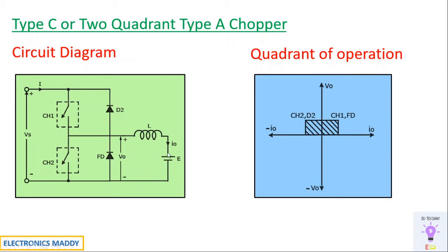When CH2 or D2 is conducting, power will be delivered from the load to the source, so the current will be positive or negative. One of the most important points to remember is CH1 and CH2 should not be triggered simultaneously. If you do that, it will be short-circuited at this point and the supply will become short-circuited. If you are practically implementing the circuit and you trigger CH1 and CH2 simultaneously, your supply will get damaged — the fuse will blow out. So be very careful.